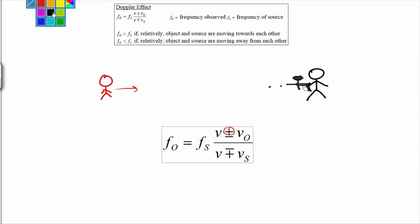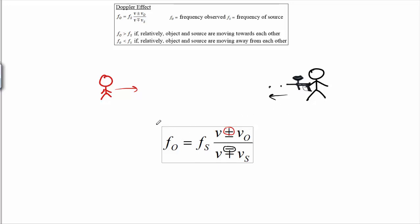Alternatively, let's say your friend also runs at you. In this case, the source is moving, so the source velocity appears in the denominator of this equation. If we subtract the velocity of the source from the velocity of light or sound in the denominator, that makes the denominator smaller, and again, that makes the observed frequency higher than the frequency of the source. So: if the observer is moving towards the source, add it in the numerator. If the source is moving towards the observer, subtract it in the denominator. Either one will increase the frequency observed.